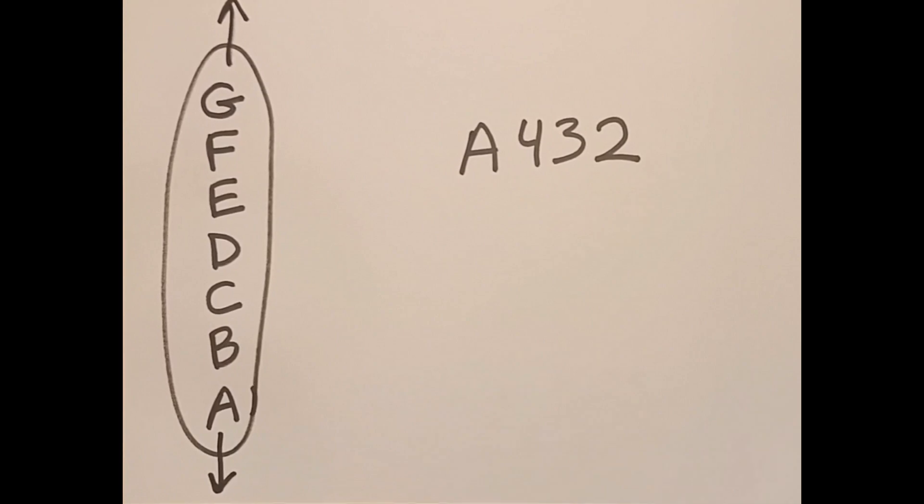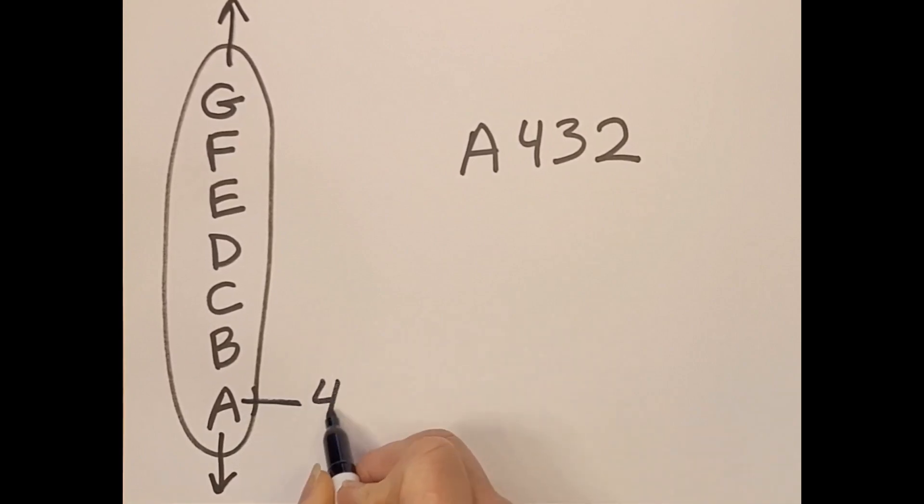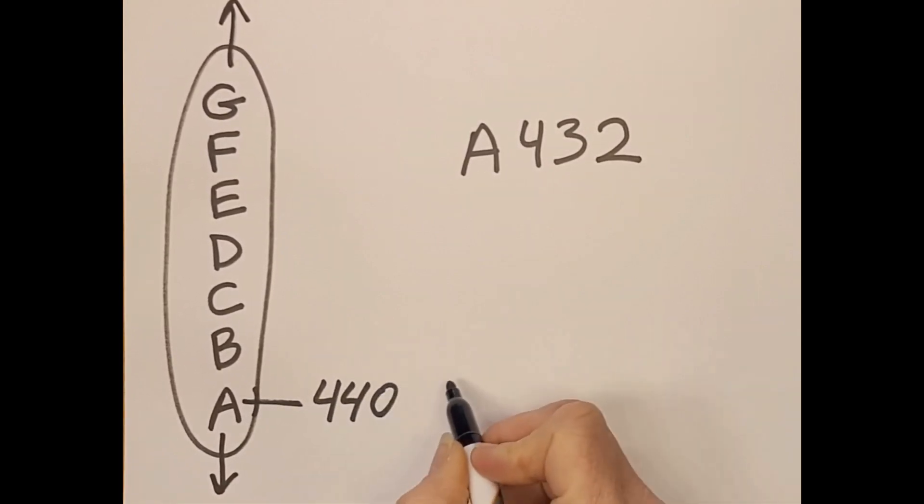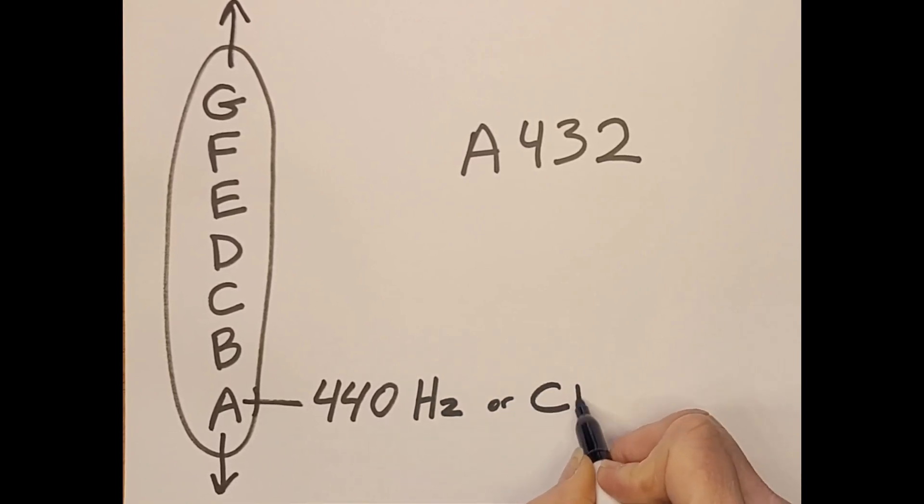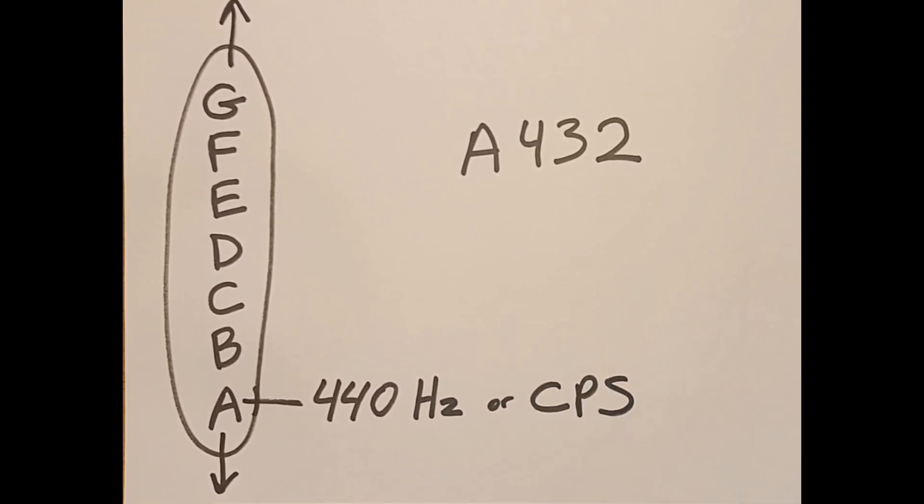Our current pitch standard is A440, meaning the A above middle C on our pianos is supposed to vibrate at 440 hertz or 440 cycles per second.